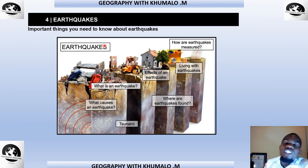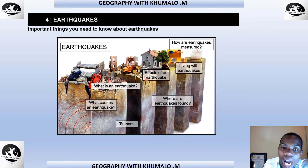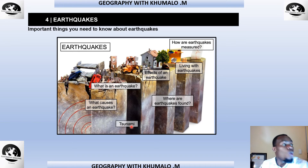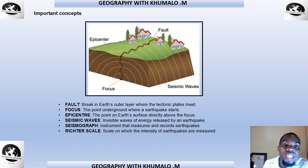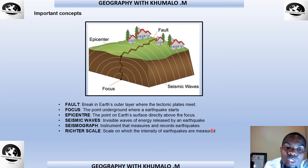We also learn about earthquakes as a natural disaster. Important things to know: what is an earthquake, what causes it, its effects, how it is measured, and where earthquakes are found. Key concepts include: a fault — a break in the earth's outer layers where tectonic plates meet; the focus — the point underground where the earthquake starts; the epicentre — the point on the surface directly above the focus; seismic waves — invisible waves of energy released; a seismograph — the instrument that measures earthquakes; and the Richter scale — the scale used to measure earthquake intensity.